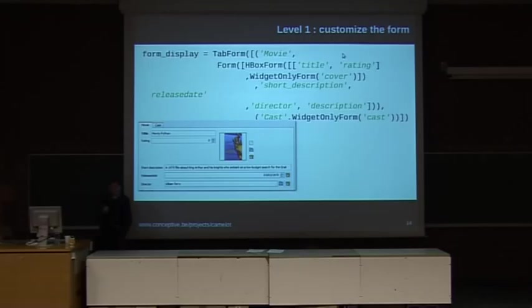We can also further define the layout of the form. This is done by instead of putting in the form display attribute a list of all fields which should be on the form, we can put in there a structure of form classes. And form classes actually map to layout managers of Qt, so you can actually have tabs and horizontal boxes and vertical boxes. And you can also very easily subclass the form.